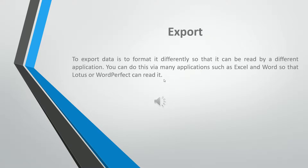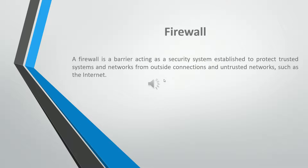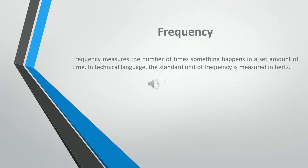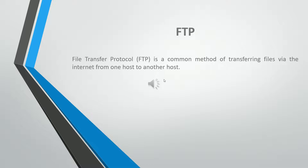To export data is to format it differently so that it can be read by a different application. You can do this via many applications such as Excel and Word, so that Lotus or WordPerfect can read it. A firewall is a barrier acting as a security system established to protect trusted systems and networks from outside connections and untrusted networks, such as the internet. Frequency measures the number of times something happens in a set amount of time. In technical language, the standard unit of frequency is measured in Hertz. File Transfer Protocol (FTP) is a common method of transferring files via the internet from one host to another.